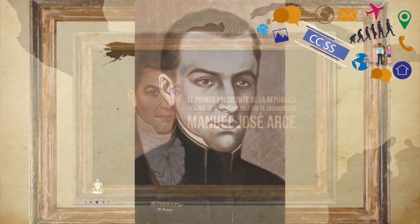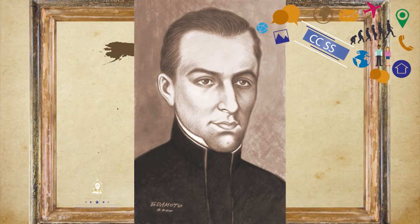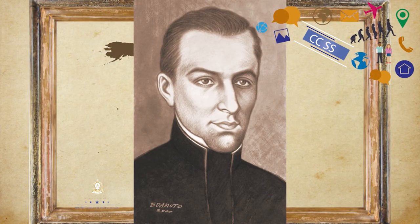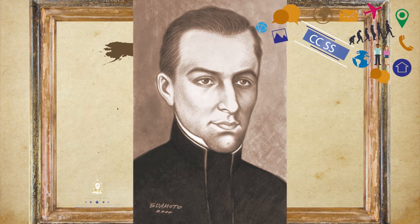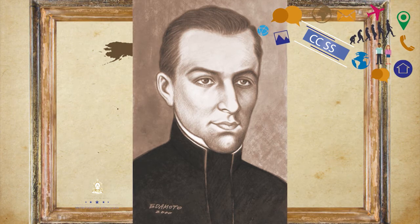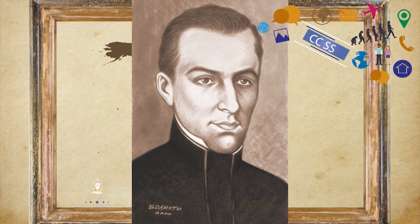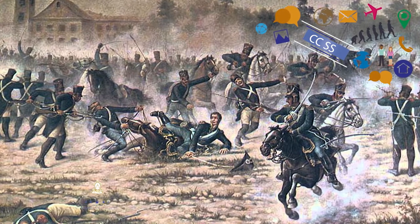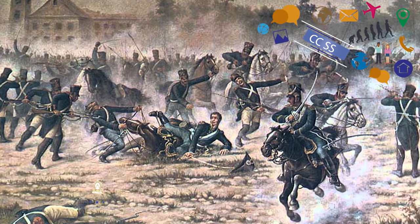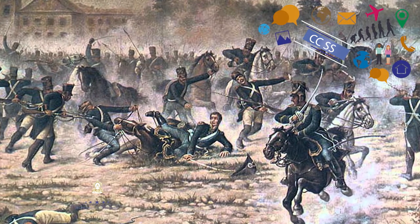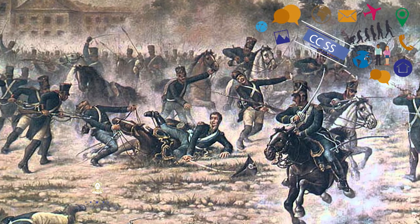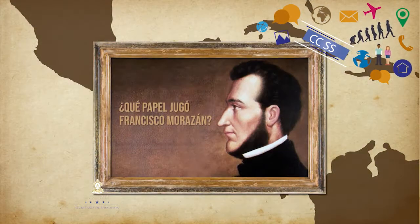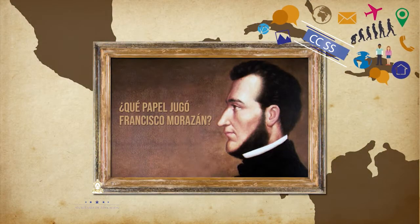También se vio implicado en el inicio de una guerra civil que llevaría a la terminación de la federación. Arce finalmente debió renunciar y un ejército formado por soldados de varios estados, denominado Ejército Aliado Protector de la Ley, capitaneado por el general hondureño Francisco Morazán, marchó contra la capital guatemalteca, la cual tomó el 13 de abril de 1829. ¿Qué papel jugó Francisco Morazán en todo esto?